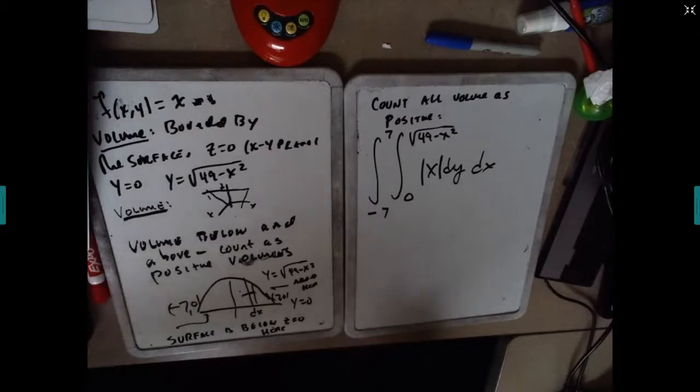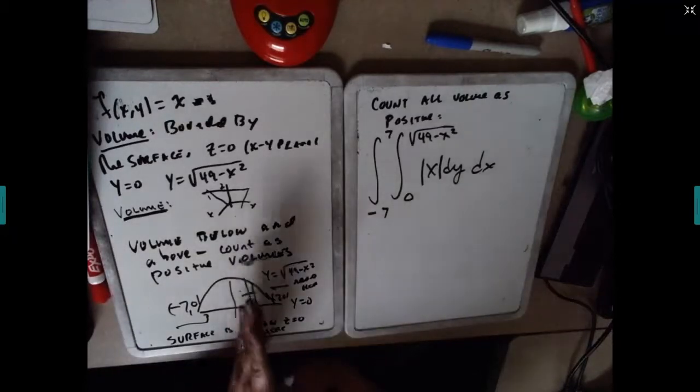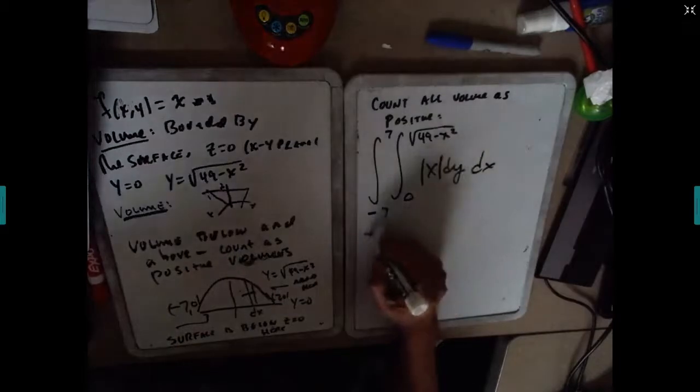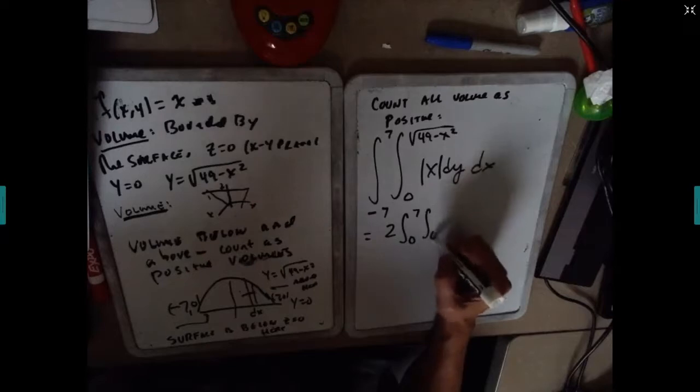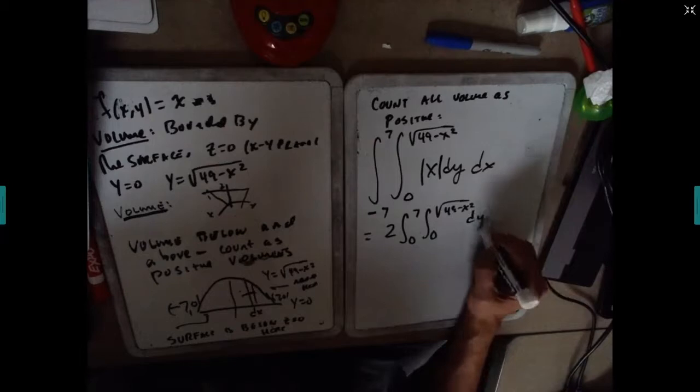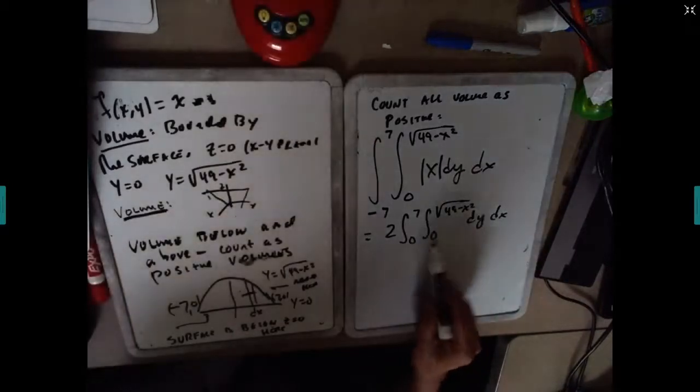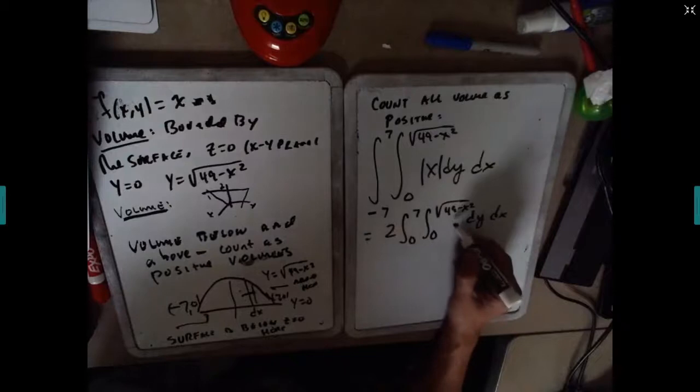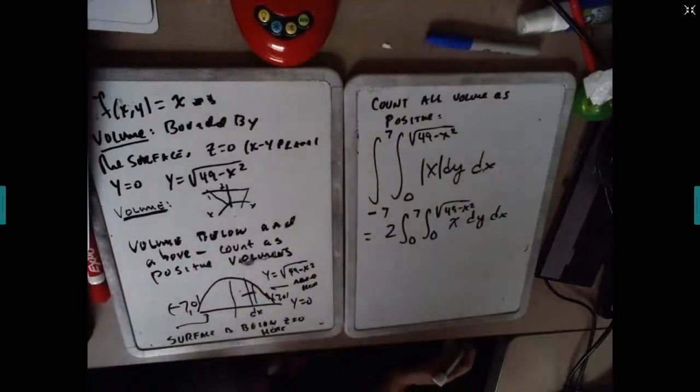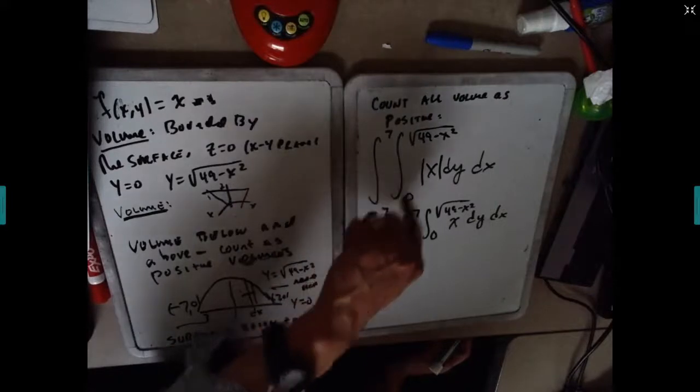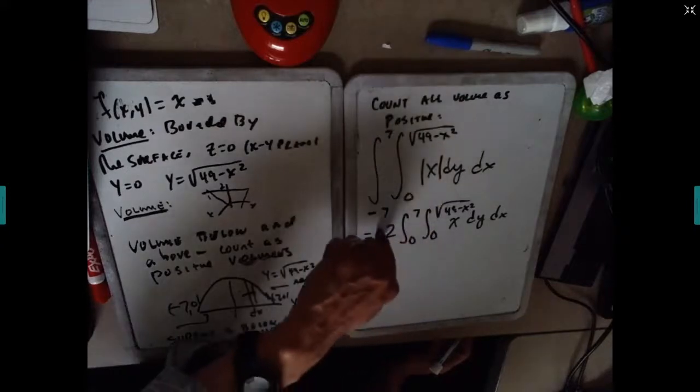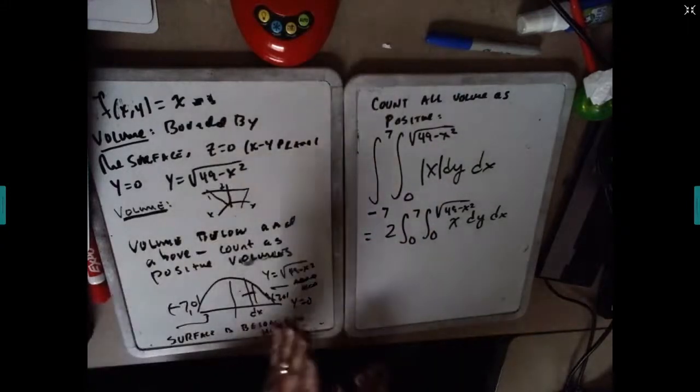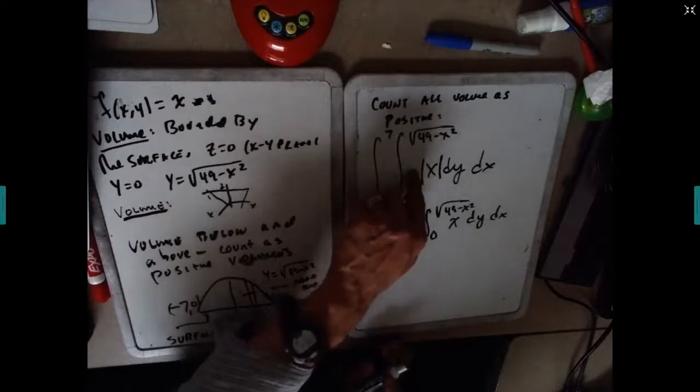And we're integrating absolute x rather than x because we want this volume to be positive. Now what we find here is because this region is symmetric with respect to x, this is going to be exactly equal to 2 times the integral from 0 to 7. And because now we've isolated x to make x positive, now we're just integrating x.